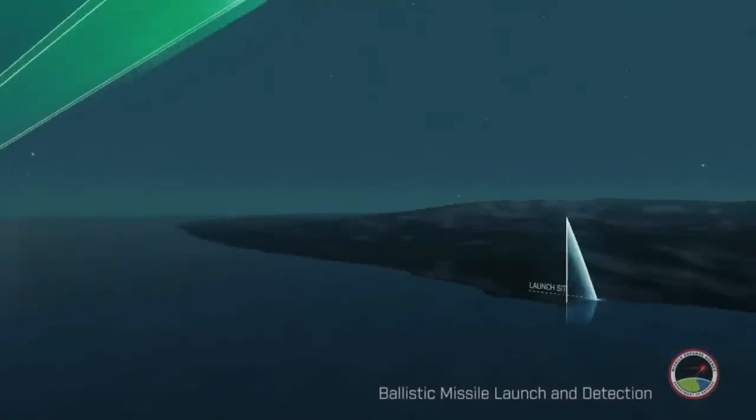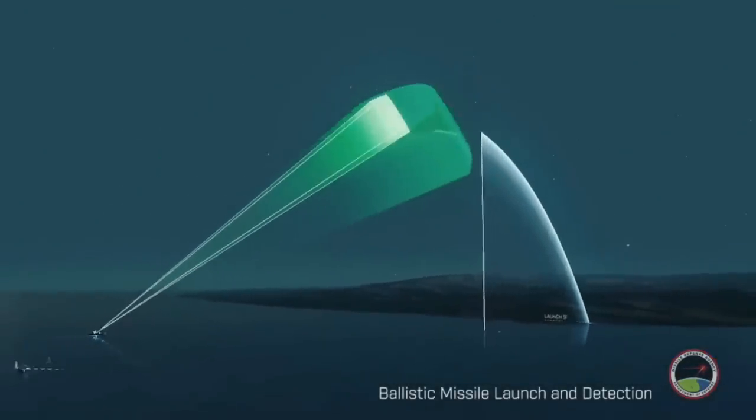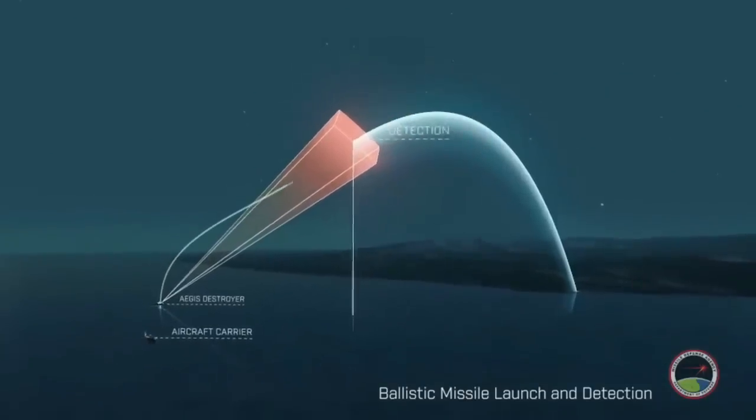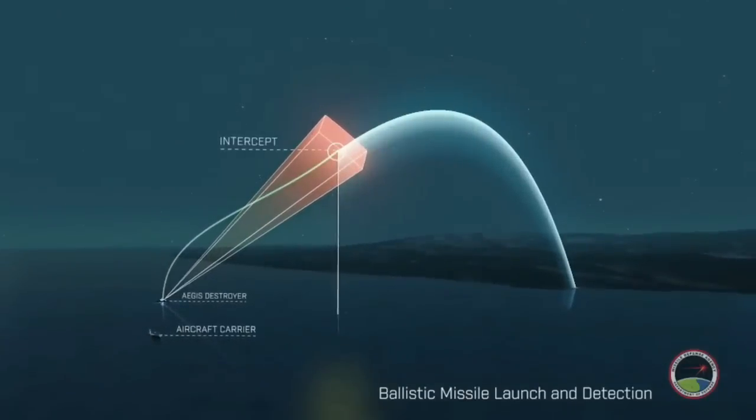In this example, the Aegis Destroyer tracks a ballistic missile in space, launches the SM-3 missile and intercepts the ballistic missile before it re-enters the atmosphere.